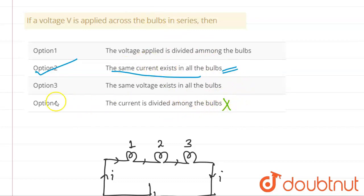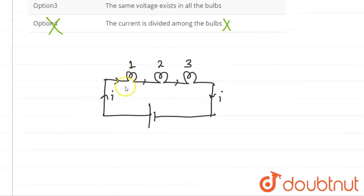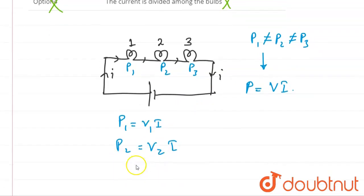If the bulbs have different power ratings P1, P2, P3, what happens? Power equals voltage times current. So P1 = V1 × I, P2 = V2 × I.